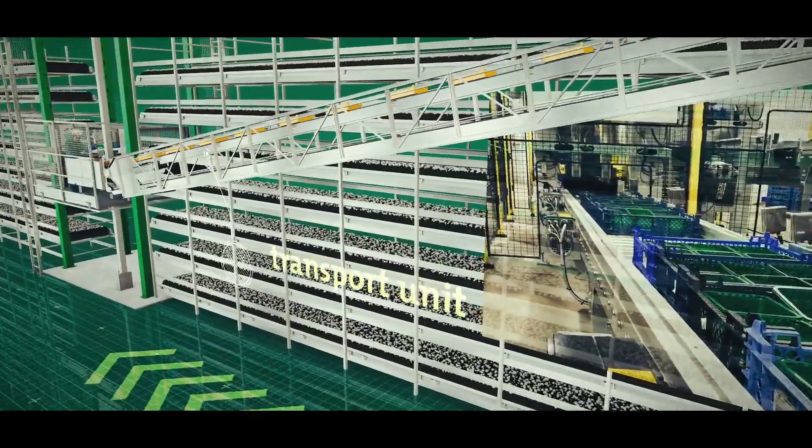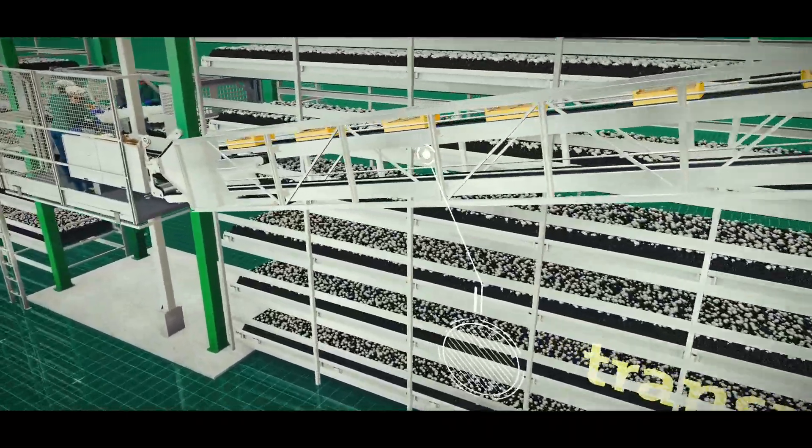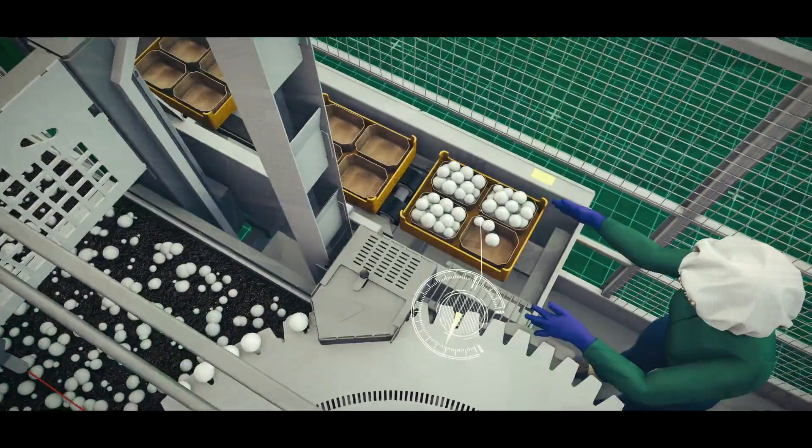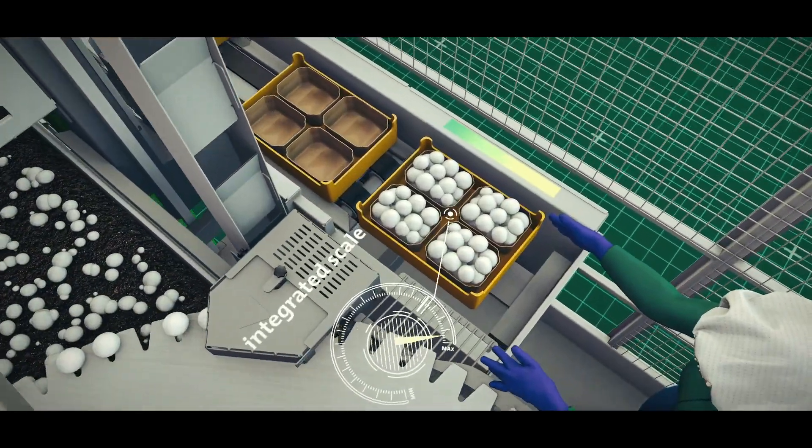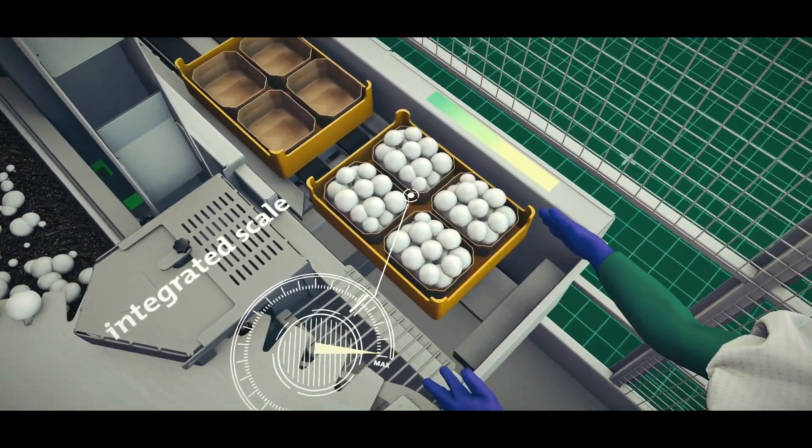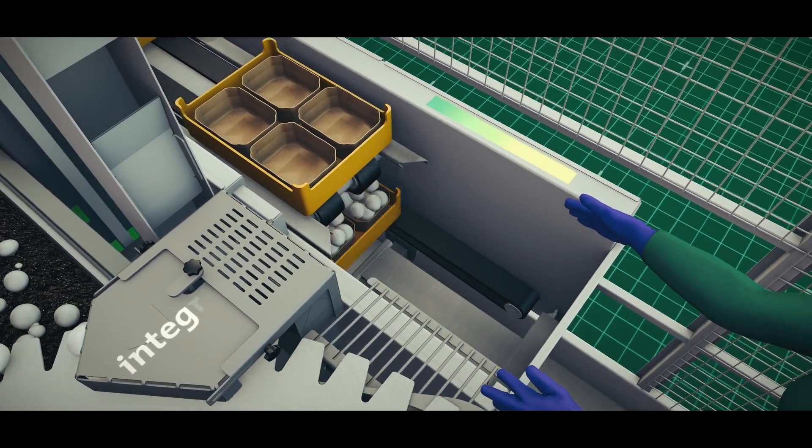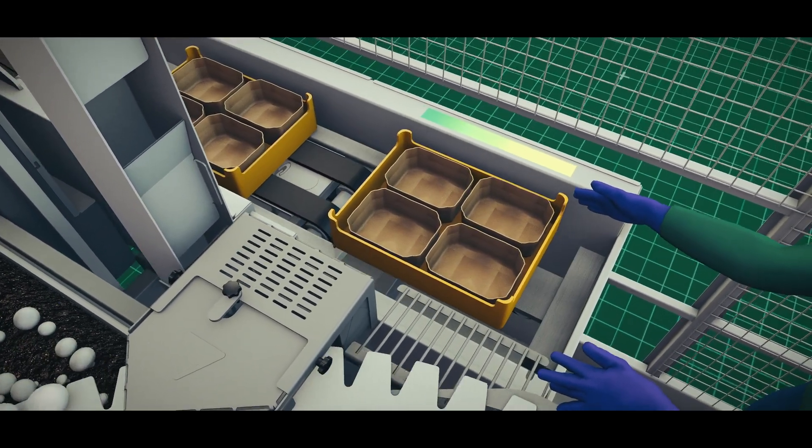The empty mushroom trays are supplied automatically via conveyor belts towards the platform. The picker fills these, and the integrated scale recognizes when the trays are full and can be discharged. For the filler, a light bar indicates how full the tray is.